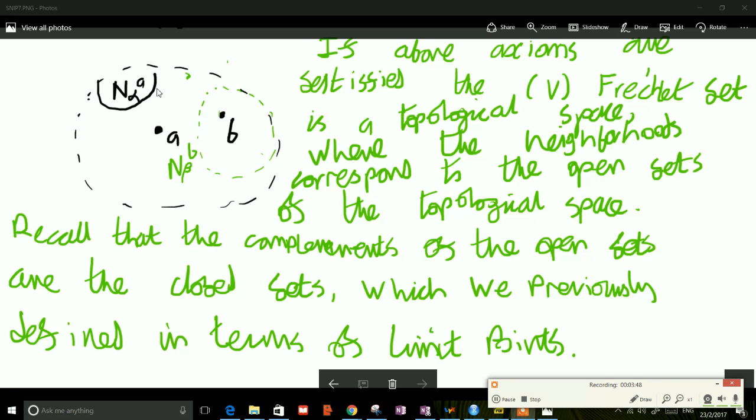Now this neighborhood N_A^α of A also contains a point B, and what we require as an axiom in this kind of scenario is that there should then exist a neighborhood of B, which in this case we've called N_B^β, which not only of course contains the point B but also is contained within the neighborhood N_A^α of A. So in other words, if A has a neighborhood which also contains a point B, then B should have a neighborhood which is contained within that first neighborhood of A.